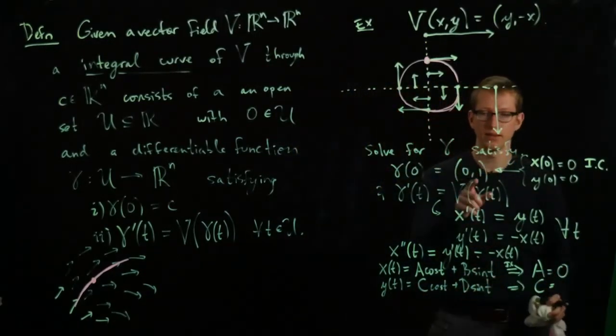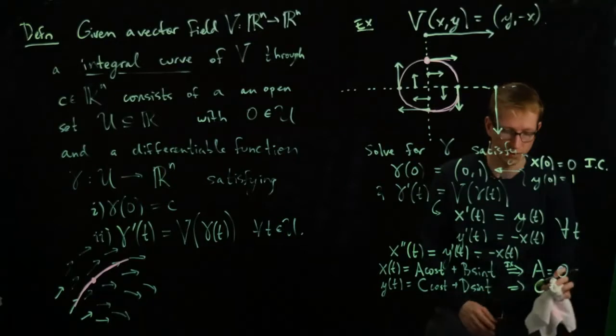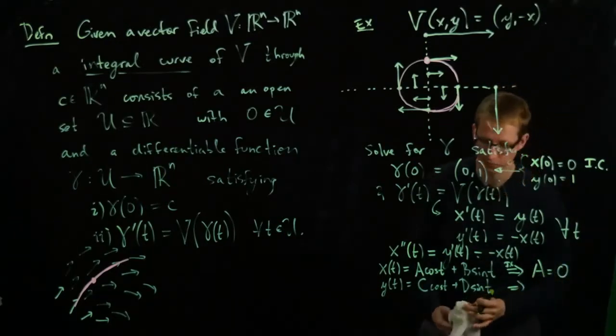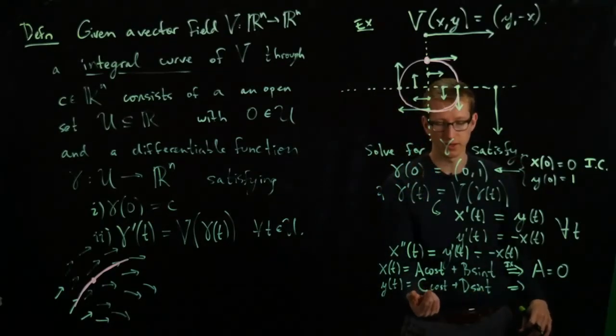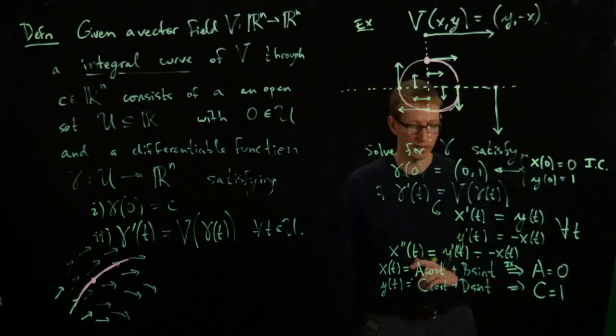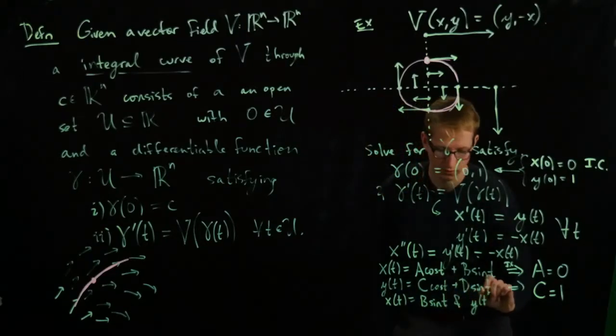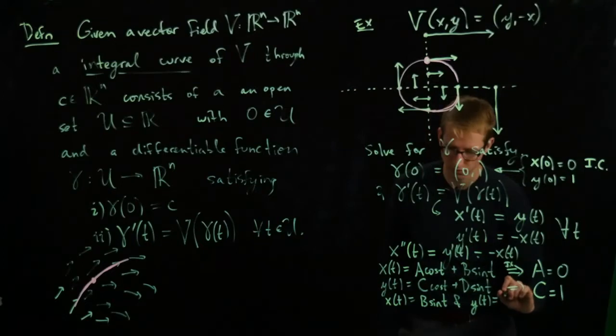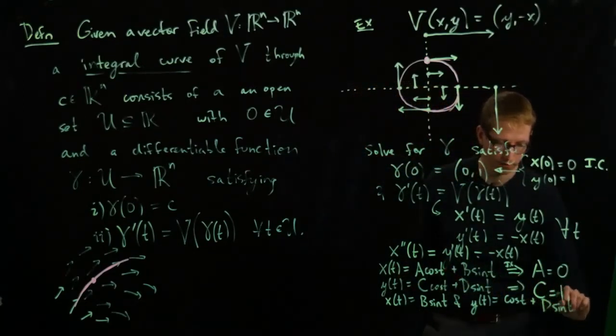And now I see that I made a mistake. This initial condition says y(0) equals 1. So let's write that here. And that changes what happens here, of course. Because it's 0, this becomes c, this becomes 0. That implies that c equals 1. So we have these two results. x(t) equals b*sin(t) and y(t) equals cos(t) plus d*sin(t).